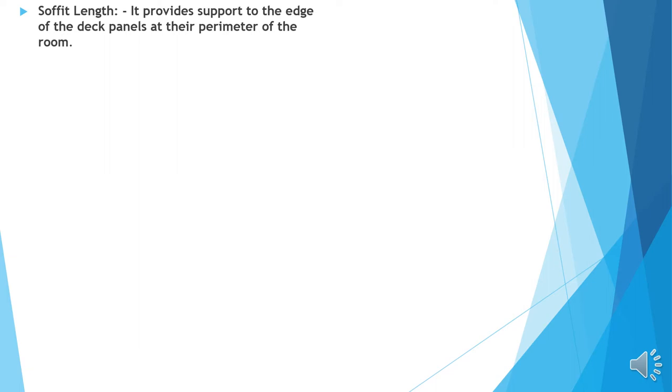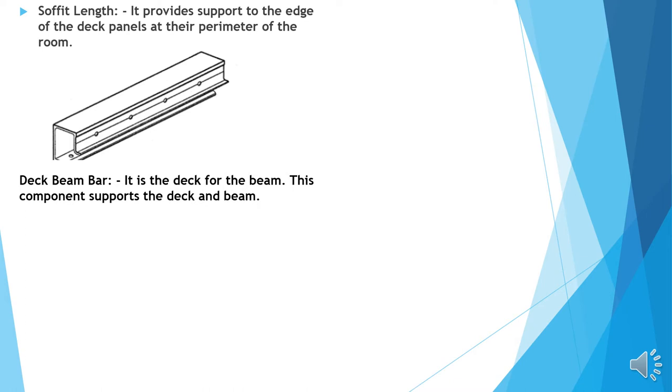It provides support to the edge of the deck panels at their perimeter of the room. This is the soffit length. Deck beam bar: It is the deck for the beam. This component supports the deck and the beam. You can see the image of it.